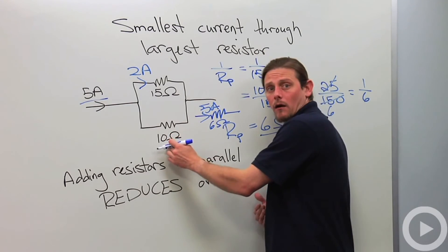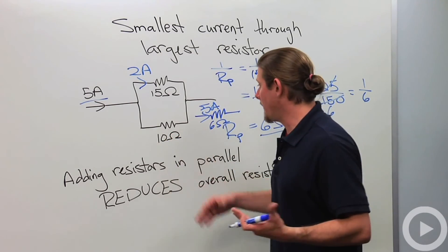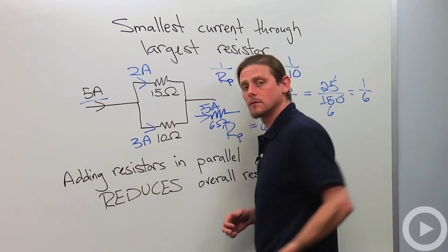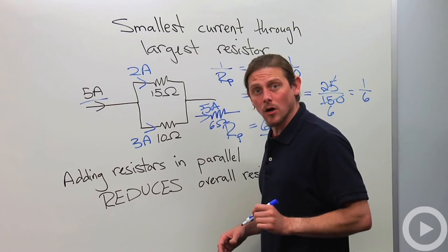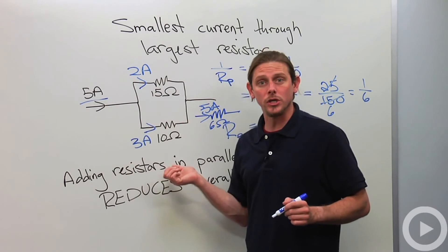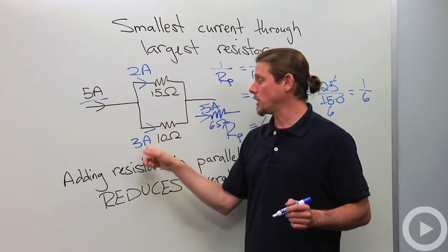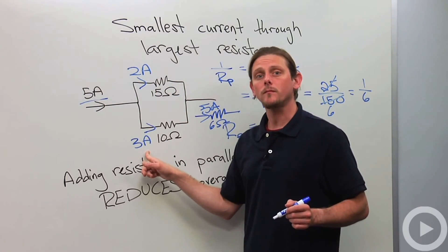What about down here? I want 30 volts across it, so how many amps do I need? 3 amps. And of course, this follows our earlier decision that the current needs to add. 5 amps go in, 2 in one branch, 3 in the other.